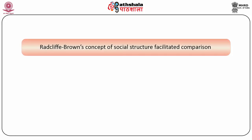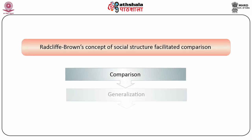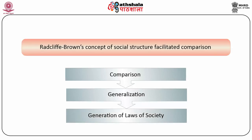Radcliffe-Brown believed that once we study social structure, it facilitates comparison — a very important point in scientific inquiry. Unless we compare society A with society B and society B with society C, we cannot generalize. Comparison was regarded as a precondition for generating law. Law generation is possible only through comparison and generalization. Anthropologists started studying the social structure of society A, then B, then C, to arrive at generalizations and thereby acquire a scientific basis.